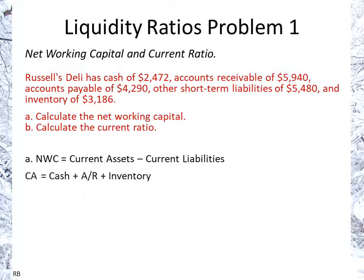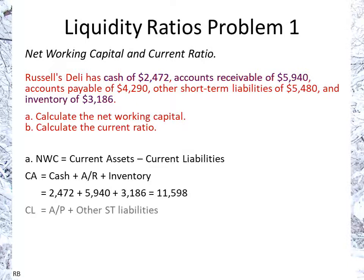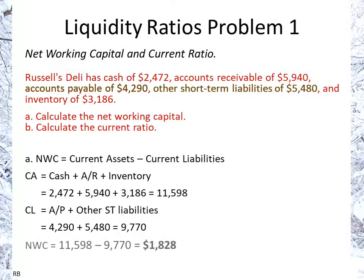The current assets in this question are cash, accounts receivable, and inventory. We add them together and that gives us 11,598. The current liabilities are accounts payable and other short-term liabilities. We add them up and that gives us 9,770.